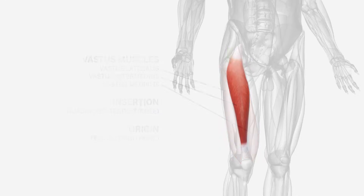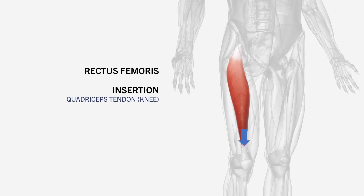The fourth quad muscle is the rectus femoris. This is the large quad muscle running down the middle of the thigh, sitting on top of the vastus muscles. It also inserts at the quadriceps tendon like the other quad muscles. However, the rectus femoris originates from a point on the pelvis, not the femur. This has implications for its function and how it is best trained, which we will cover throughout this video.